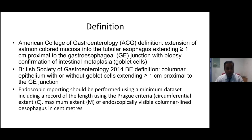The British Society of Gastroenterology defines Barrett's as columnar epithelium with or without goblet cells extending more than or equal to one centimeter proximal to the gastroesophageal junction.